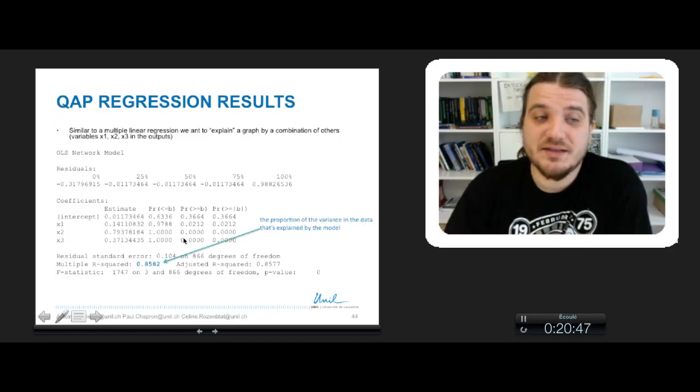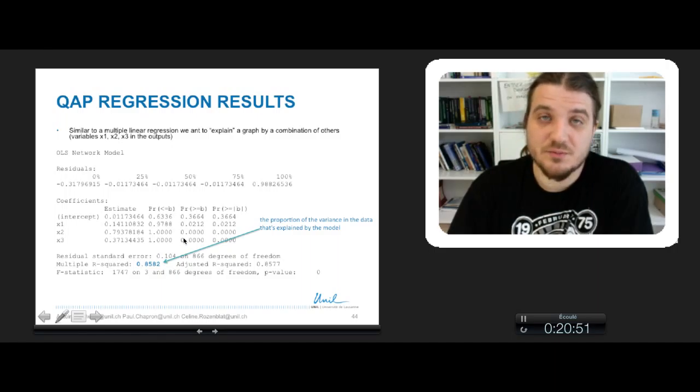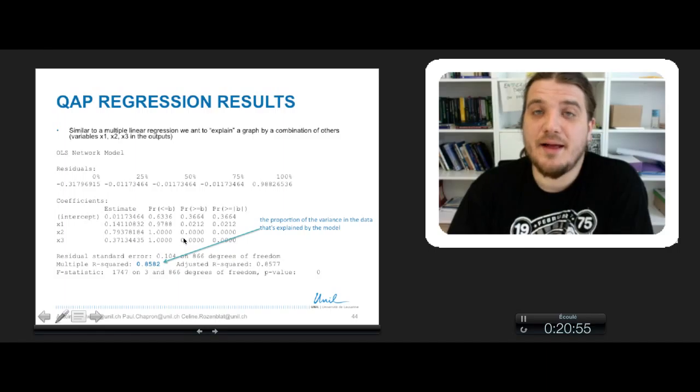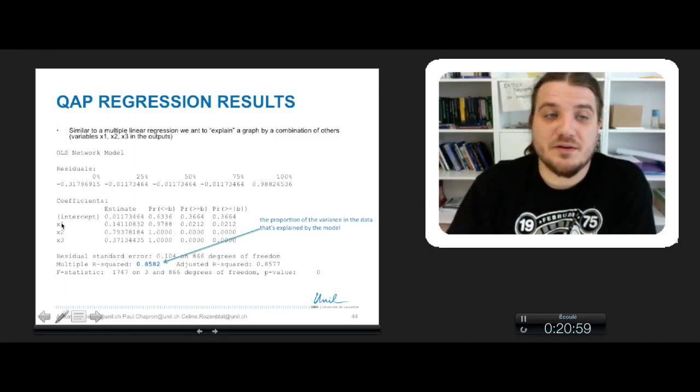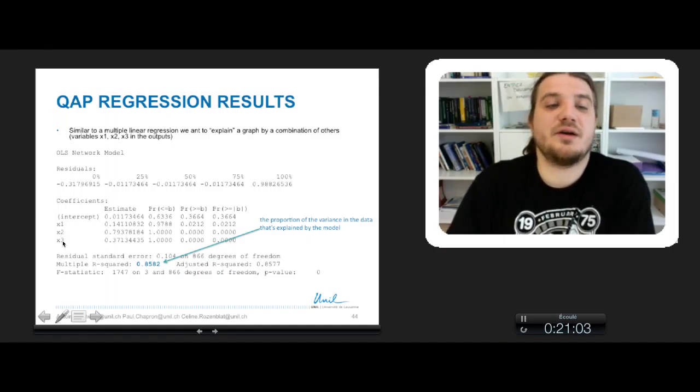The other measure is the multiple R-squared, which is the proportion of variance of your data that you have been able to explain by your model. In this case, the model is a combination of the variable x1, the graph G1, the graph G2, and the graph G3.